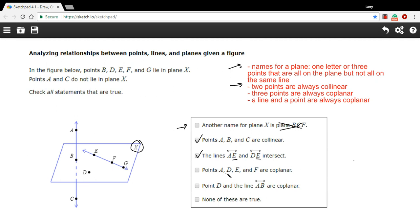The next one says points A, D, E, and F are coplanar. So here's A, D, E, F. Well, D, E, and F are definitely all in plane X. A is not. So I'm going to say this one is false.